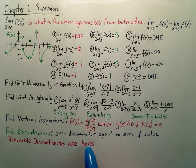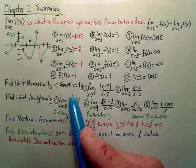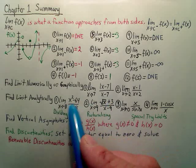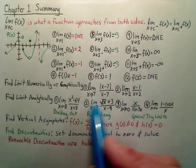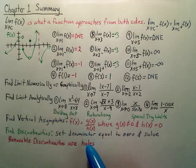Again, a removable discontinuity is a hole. It's this type where you cancel out. These two will be holes. So this, and I think all these are holes.